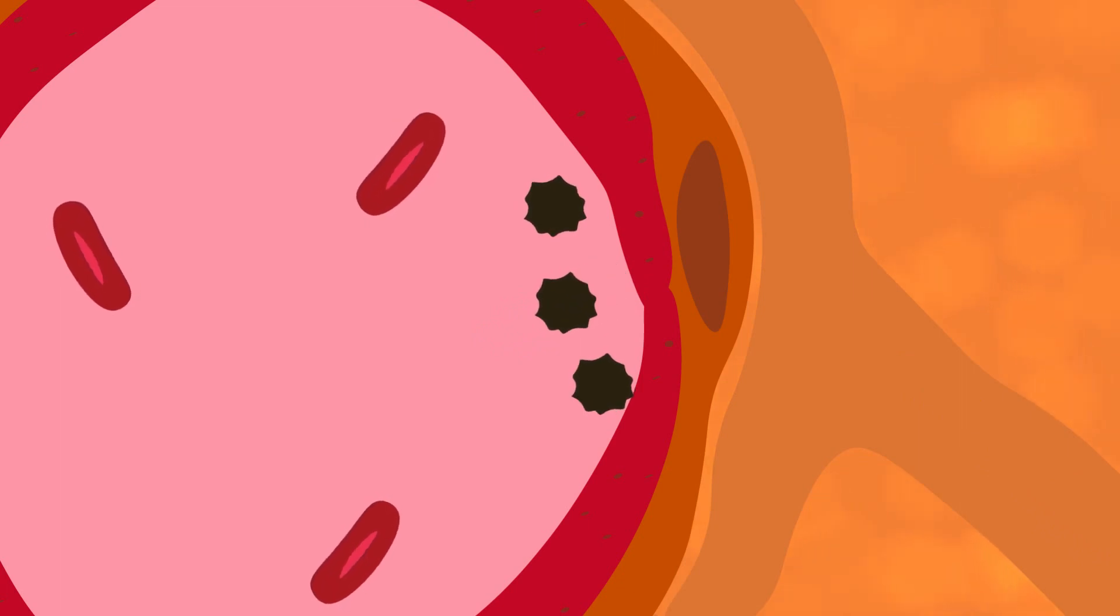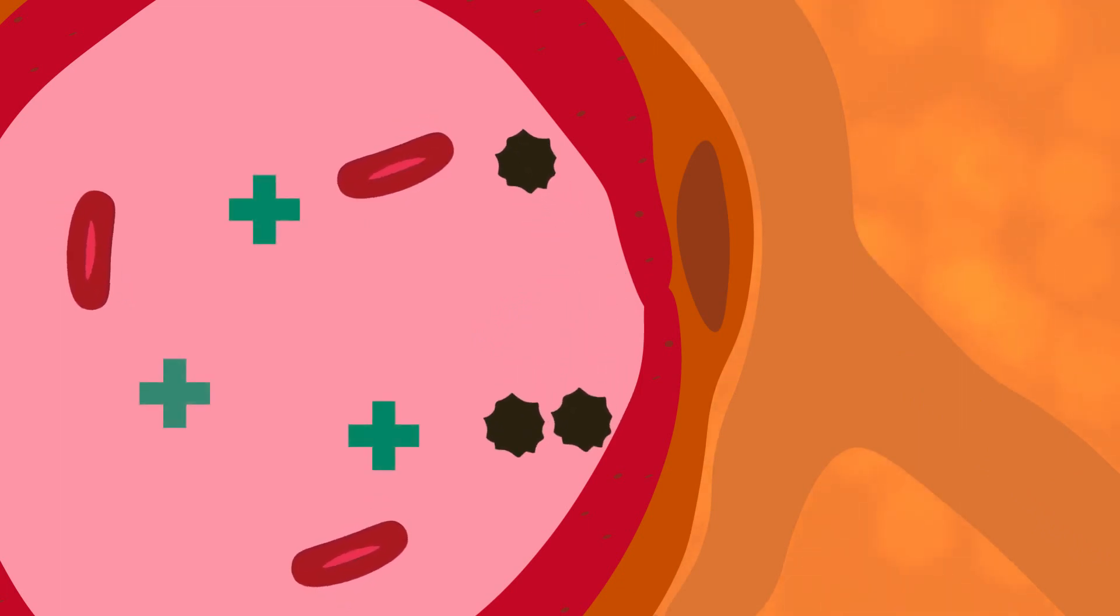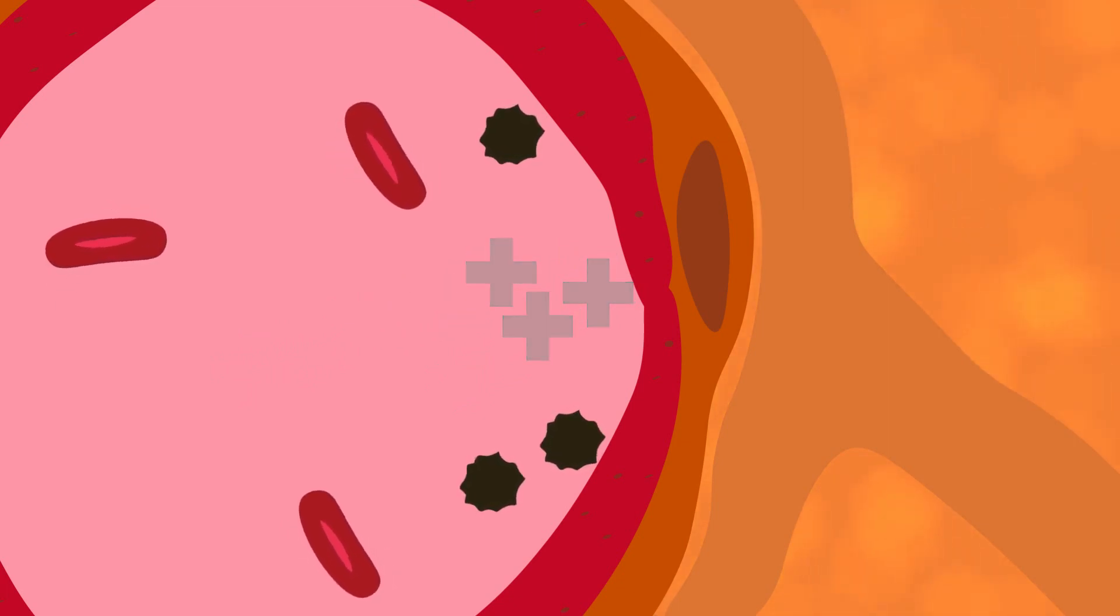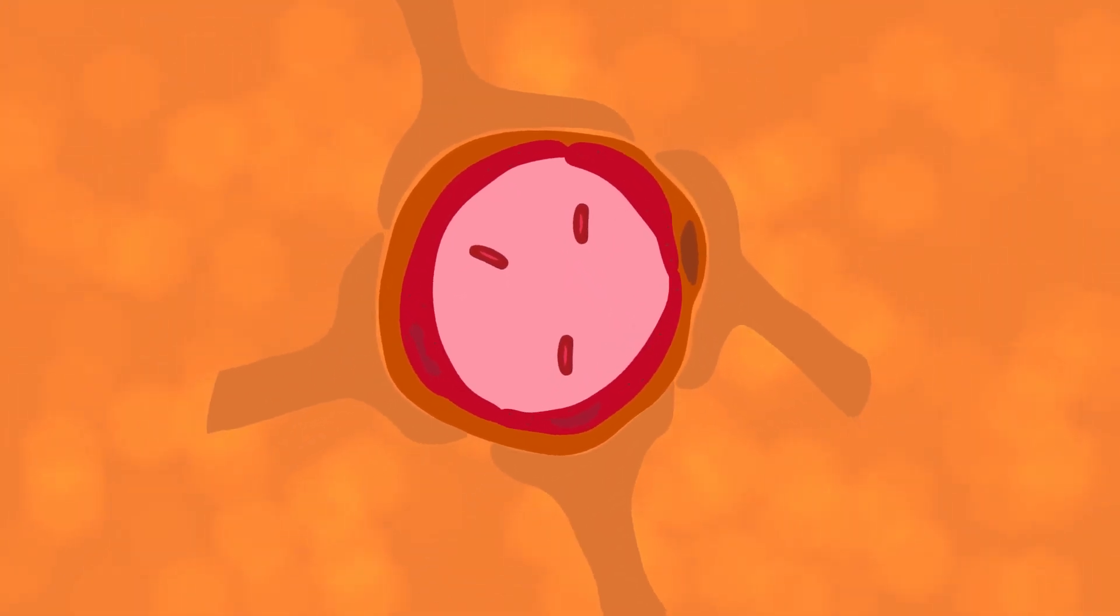These junctions are so effective at restricting access to the brain that they continue to foil any attempt to deliver treatments through those gaps. So while the blood-brain barrier is important in maintaining the delicate chemical balance of the brain, it also blocks potentially life-saving drugs and treatments.